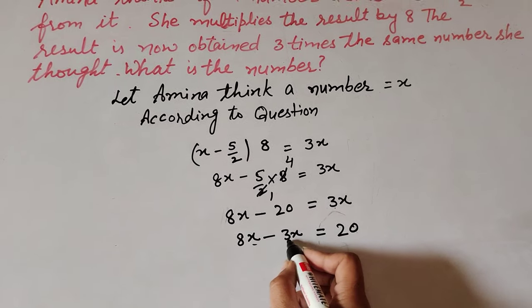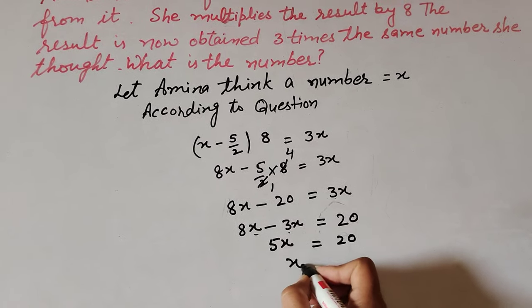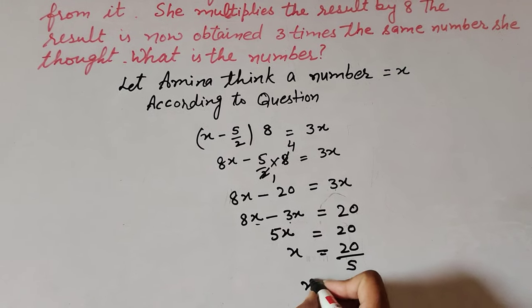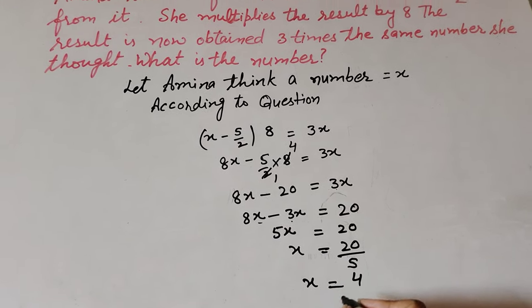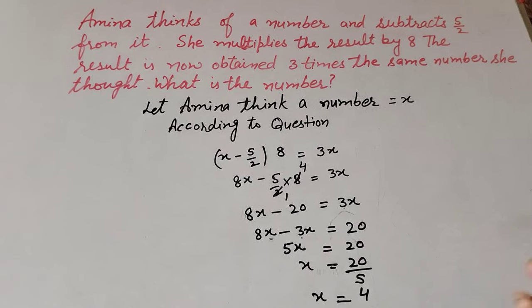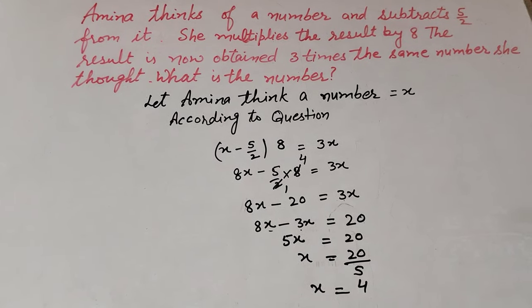8x - 3x = 5x, which equals 20. So x = 20/5. 20 divided by 5 equals 4. Therefore, Amina thinks of the number 4.